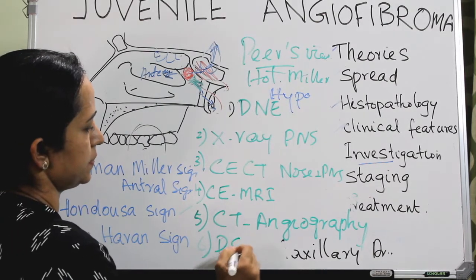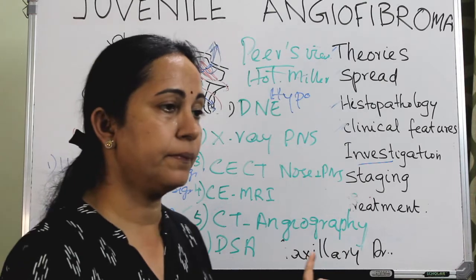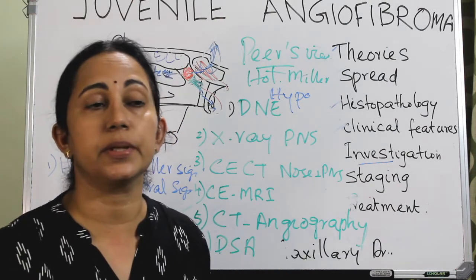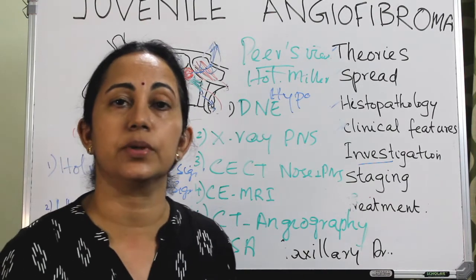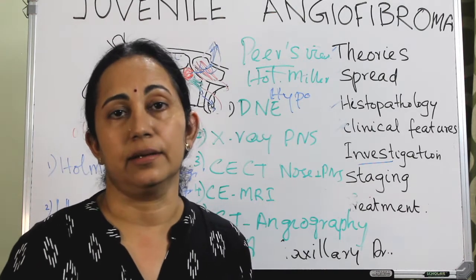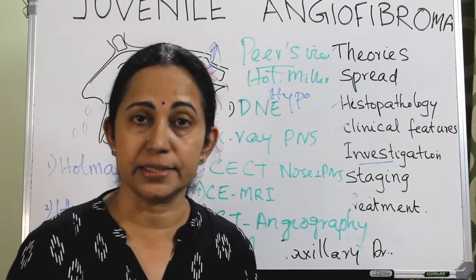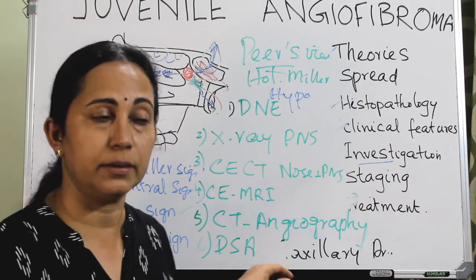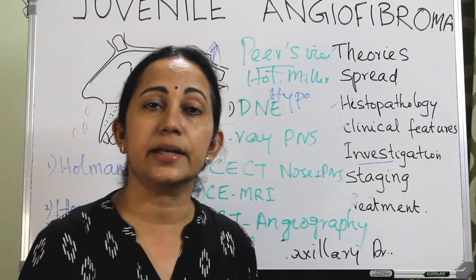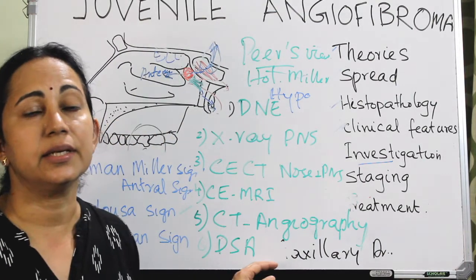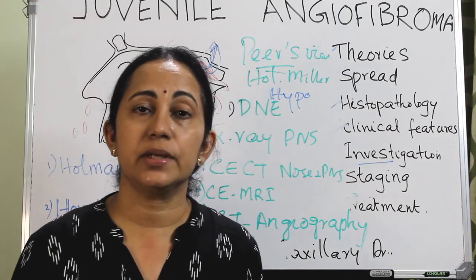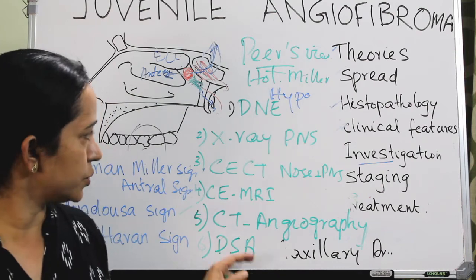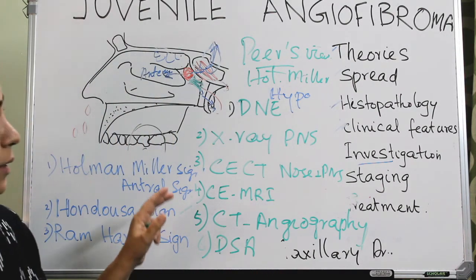Digital subtraction angiography (DSA) is useful for selective identification of the feeder vessel and its preoperative embolization. Through DSA, we can identify the exact vessel supplying the tumor and embolize it selectively preoperatively. The characteristic appearance on DSA is a tumor blush. Additionally, DSA gives knowledge about the anticipated blood loss during surgery. These are all the investigations done for angiofibroma.